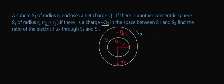So this is our question. Now we need to find the ratio of electric flux through S1 and S2. If we mark the electric flux through S1 as phi 1 and the flux through S2 as phi 2, then we need to calculate phi 1 by phi 2.